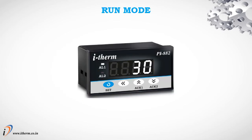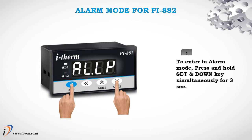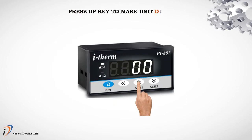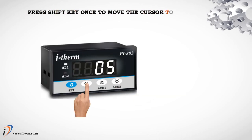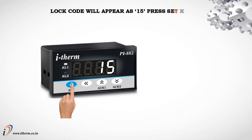Run mode. Alarm mode for PI882. To enter alarm mode, press and hold the Set and Down keys simultaneously for 3 seconds. Press the Up key to make the unit digit 5, press the Shift key to move the cursor to the next digit, press Up to make that digit 1. The lock code will appear as 15. Press Set key to enter the alarm parameters.